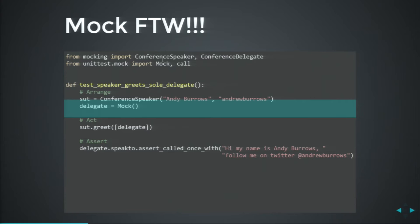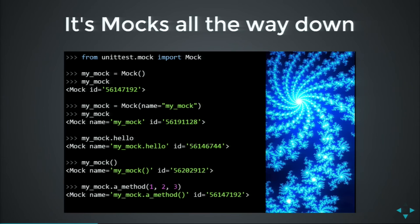We can use the mock library. If you're on Python 3.3 and up, you can import it from unittest.mock. Prior to that, you can pip install mock as a rolling backport and import from mock. We're able to create an instance of the mock object, pass that into our greet function, and then assert that the right kind of thing happens. The most important thing you need to know about mock objects is that everything on a mock object is another mock object — every attribute, every method, the return value of calling it. It's mocks all the way down until you hit the turtles.